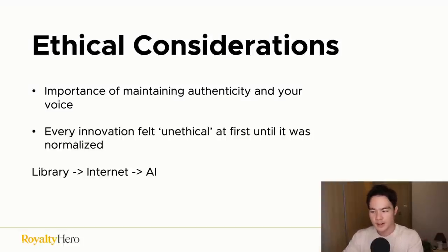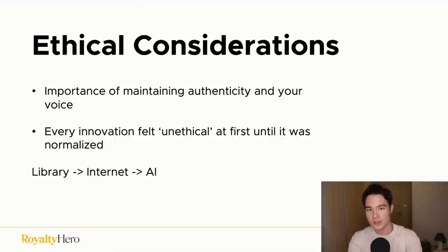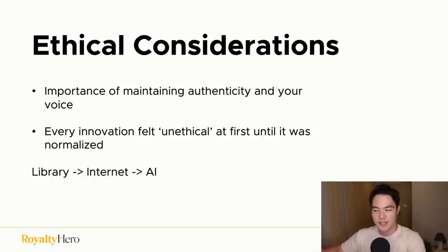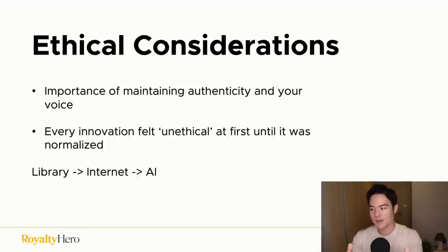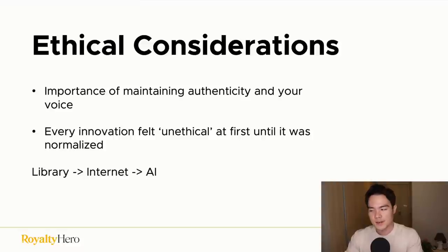Think about it: people started writing books, then libraries were created as resources. Some people began using other books as references and faced pushback that it was unethical or stealing content. Then the internet came out and people started using internet research to write books, and again people said it was unethical — until it became normalized. So based on that, using AI as a resource to write books is a new thing people are calling unethical, but I'm pretty sure over time it's going to be normalized as well.